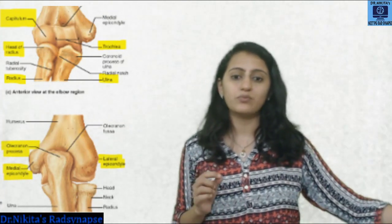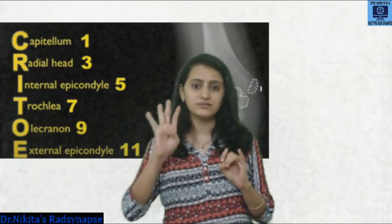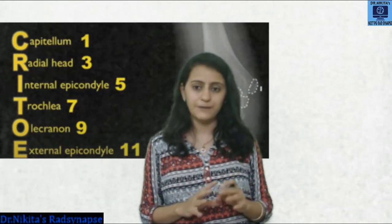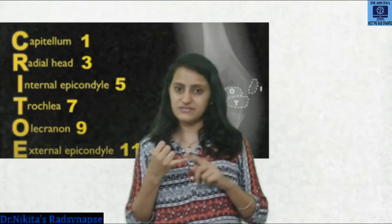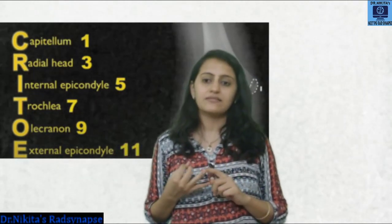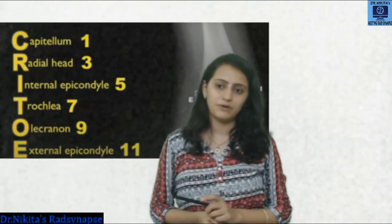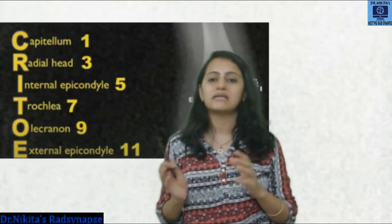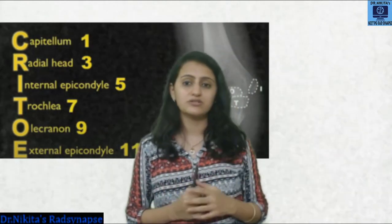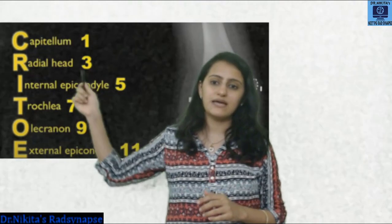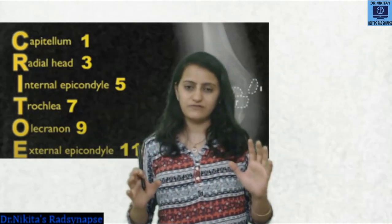There are six ossification centers: four for the humerus, one for the radius, one for the ulna. The mnemonic to remember is CRITOE — Capitulum, Radial head, Internal (medial) epicondyle, Trochlea, Olecranon, External (lateral) epicondyle. The ages of appearance follow the odd numbers: 1, 3, 5, 7, 9, 11 years respectively.